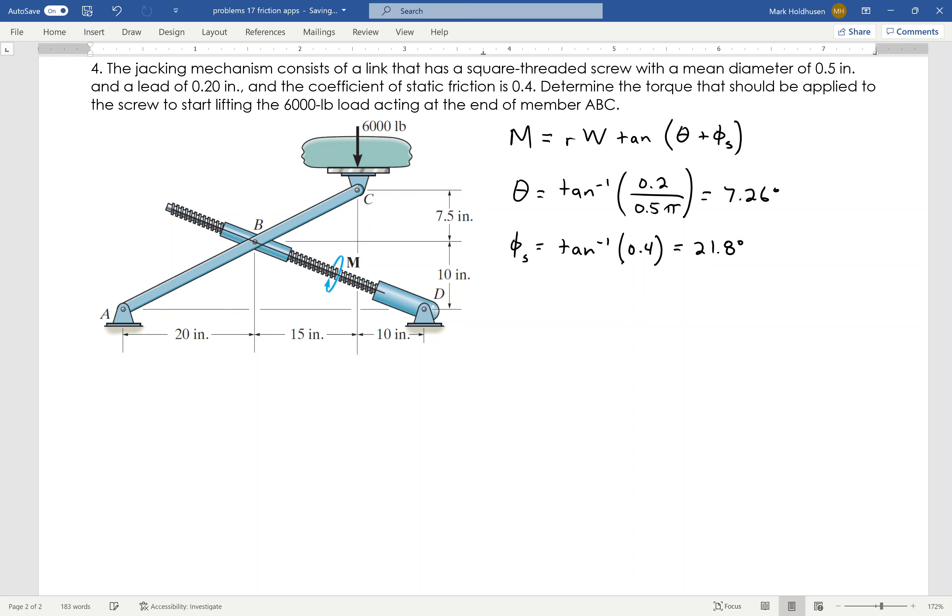And again, because the friction angle is bigger than the lead angle, this thing is self-locking, which is good because if you let go of that torque, you don't want the load to fall back down on top of you.